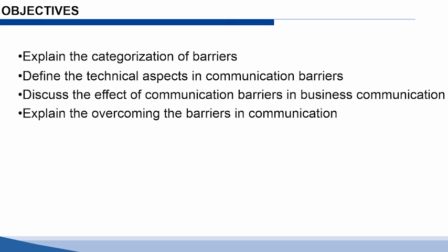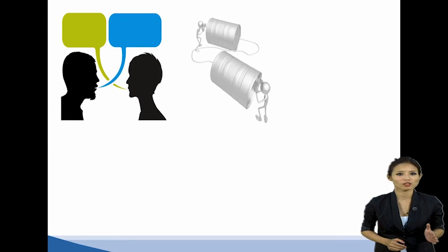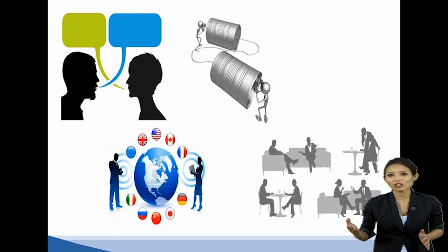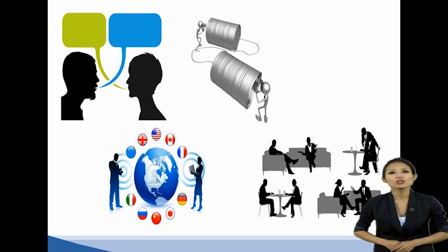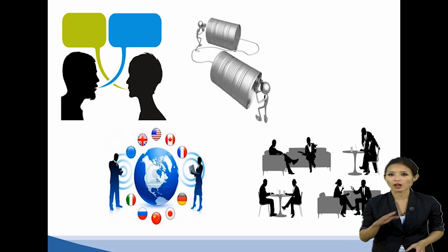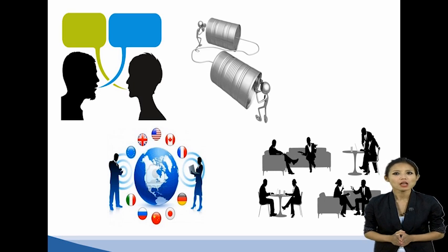We will also explain overcoming the barriers in communication. Let us now start with what is communication. Communication is a process beginning with a sender who encodes the message and passes it through some channel to the receiver who decodes the message. Communication is fruitful if and only if the messages sent by the sender are interpreted with the same meaning by the receiver. If any kind of disturbance blocks any step of communication, the message will be destroyed.